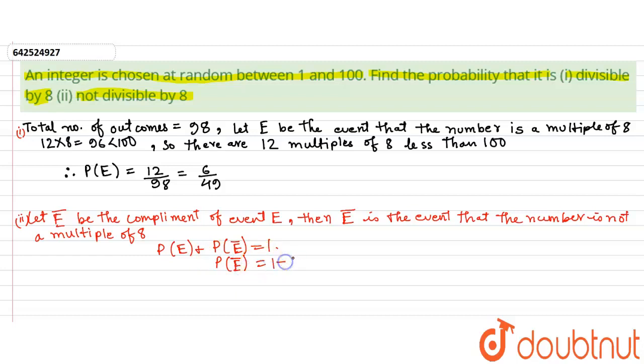In this case it turns out to be 1 minus probability of E, that is 1 minus 6 by 49, which is finally equal to 43 by 49.